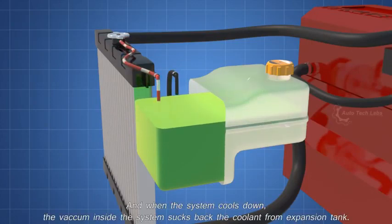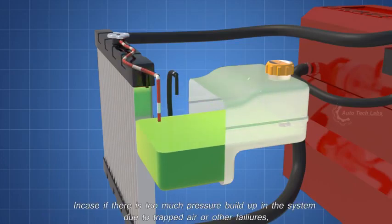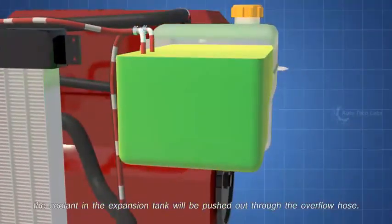And when the system cools down, the vacuum inside the system sucks back the coolant from expansion tank. In case if there is too much pressure build up in the system due to trapped air or other failures, the coolant in the expansion tank will be pushed out through the overflow hose.